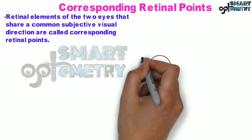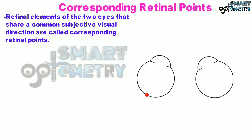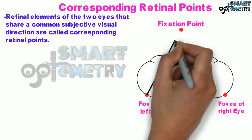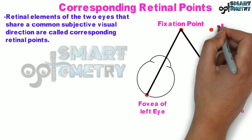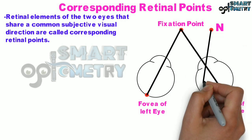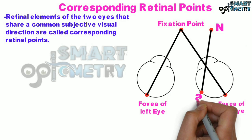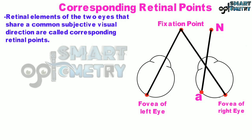In the diagram alongside, you can see that the fovea of the left eye and the fovea of the right eye are being stimulated simultaneously by the common fixation point straight ahead. Another point N stimulates the corresponding nasal retinal point A in the right eye and the temporal retinal point B in the left eye respectively. They have a common visual direction.